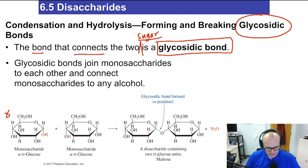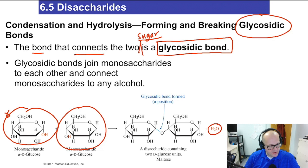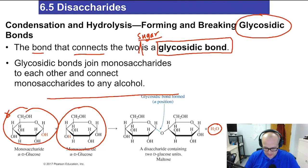Now let's take a look at this diagram. Here we have the monosaccharide glucose being added to another monosaccharide glucose. Look at one of the products — one of the products of this reaction to form the disaccharide is water. So going from left to right, this is a condensation reaction because it forms a molecule of water.